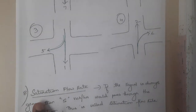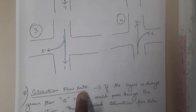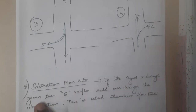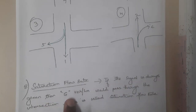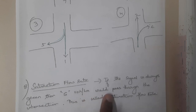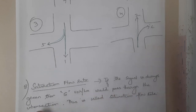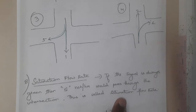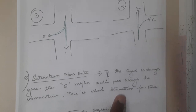The last definition is saturation flow rate. If a signal is always green, 's' vehicles per hour would pass through the intersection — this is called the saturation flow rate.